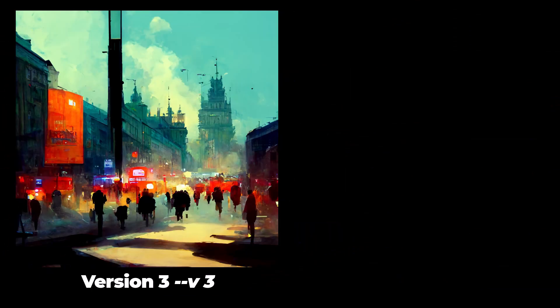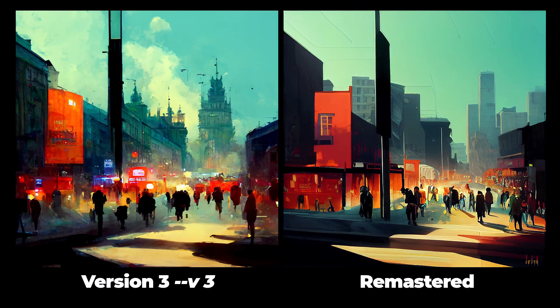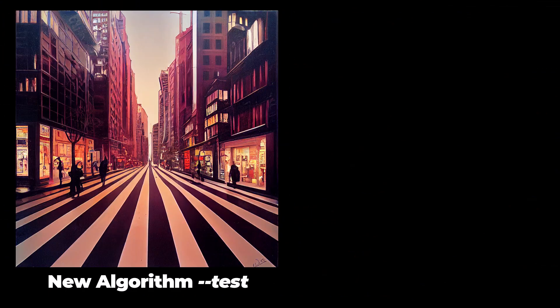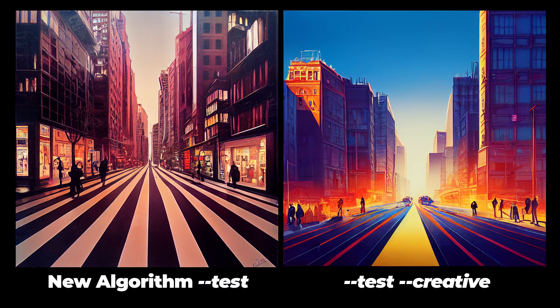It's a great comparison to see how it's evolved even in the early days. Version 3 is a little bit more dramatic, a little bit better with the lighting, and remastering again has a similar effect — though I feel like this one hasn't remastered as well as others. The new algorithm gives a whole different look with a much better balance of color and depth, and it's just another sign of how much Midjourney has improved.